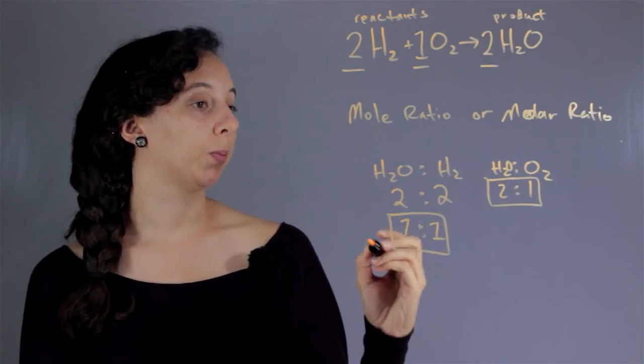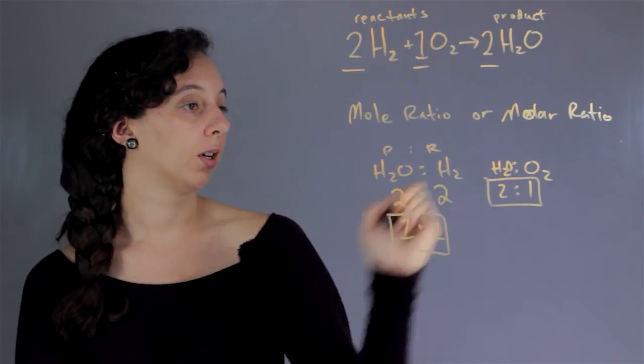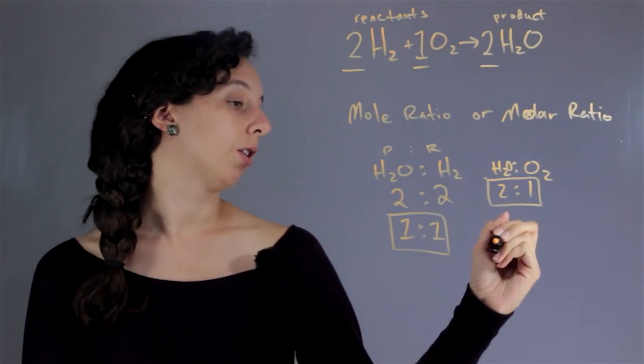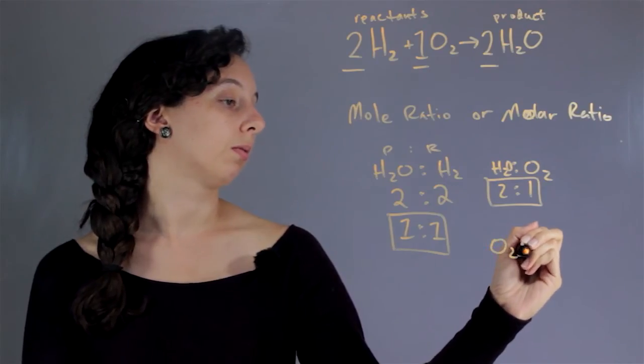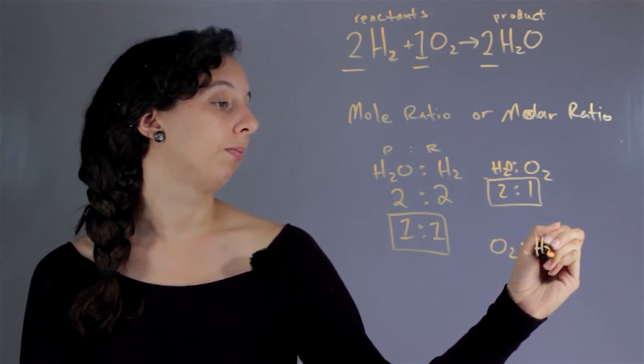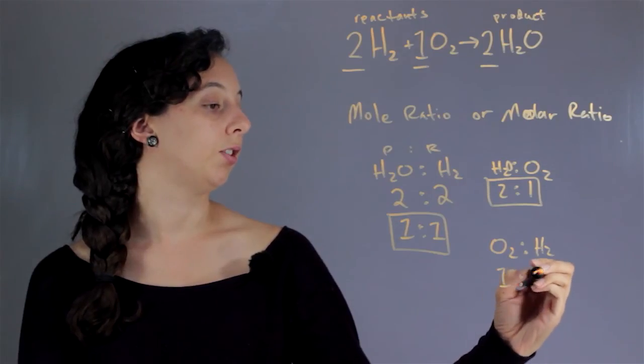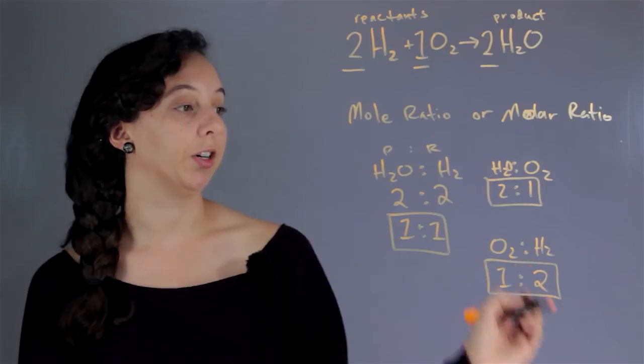But this is both products to reactants. But what if we do the products, or both the reactants? So we can do O2, ratio of O2 to H2, and it's going to be one here and two here. And again, we can't reduce that. So it'll be one to two.